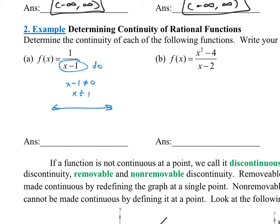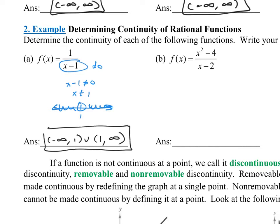Thinking about a real number line, here's the number one — I have to exclude it but can include everything else. Going from left to right, it goes all the way to the left: negative infinity to one, with parentheses, because intervals of continuity almost always use parentheses. Then using the union symbol, pick back up just past one and go all the way to infinity. That's how in interval notation we exclude the number one.